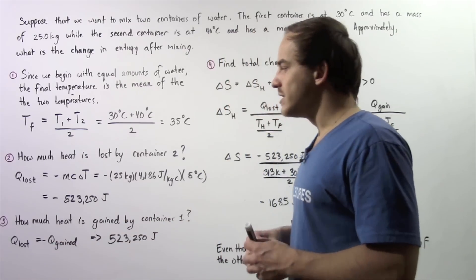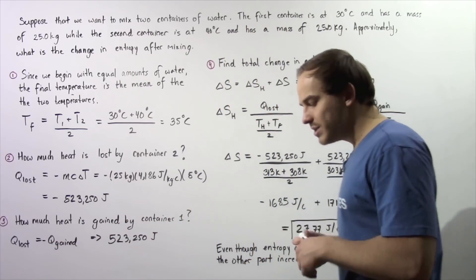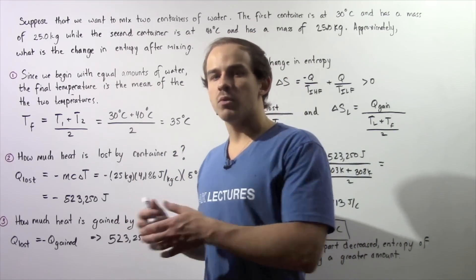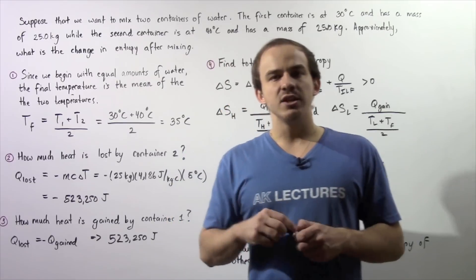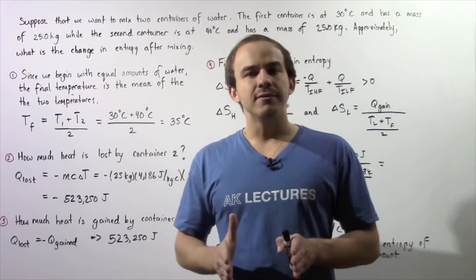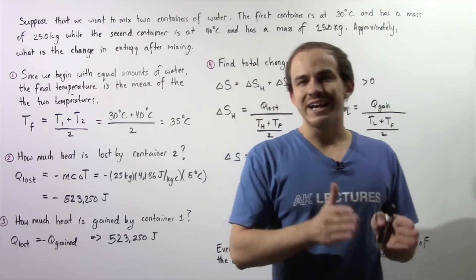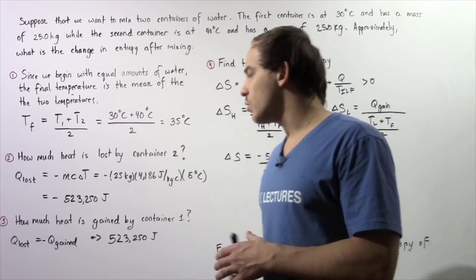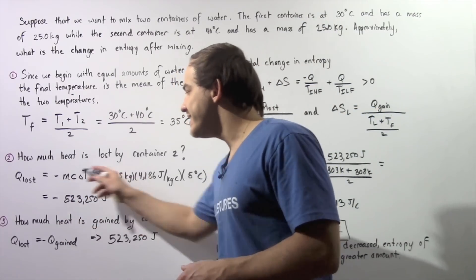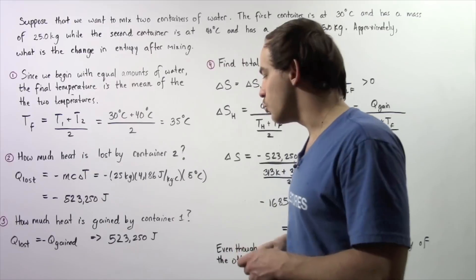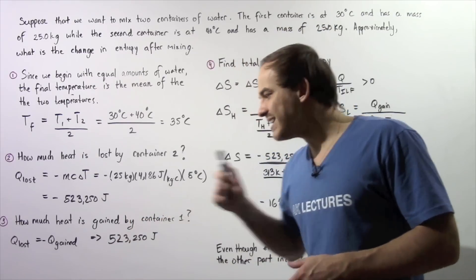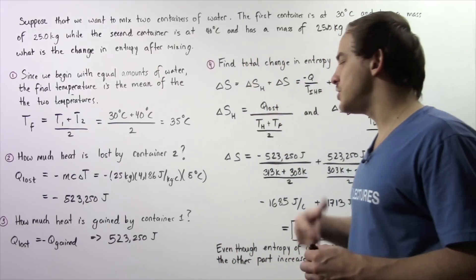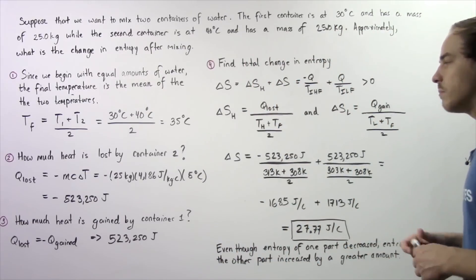Now let's move on to step three: calculate how much energy is gained by the water in container number one. Because we're dealing with an isolated system, all the energy lost by the water in container two is gained by the water in container one. So we simply take the negative of this value, giving us positive 523,250 joules of energy gained by container number one.